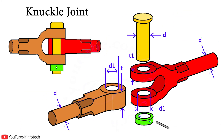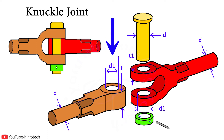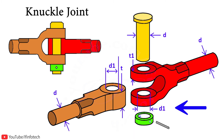The major dimensions are: diameter of the rod, denoted as small d; small t is the thickness of the single eye; d1 is the thickness of the double eye. Small d1 is also the diameter of the single eye, and for the double eye the diameter would be the same. The knuckle pin diameter is equal to the diameter of the rod, that is small d.